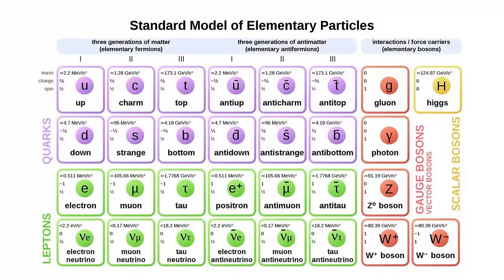The standard model of particle physics basically tells us about nature's most basic elements and their interactions — it's the substructure as far as we understand it. If you look at atoms, we know they have nuclei and electrons. Nuclei have protons and neutrons in them. Protons and neutrons have particles called quarks that are held together by something called the strong force, the strong nuclear force, the weak nuclear force, and electromagnetism.